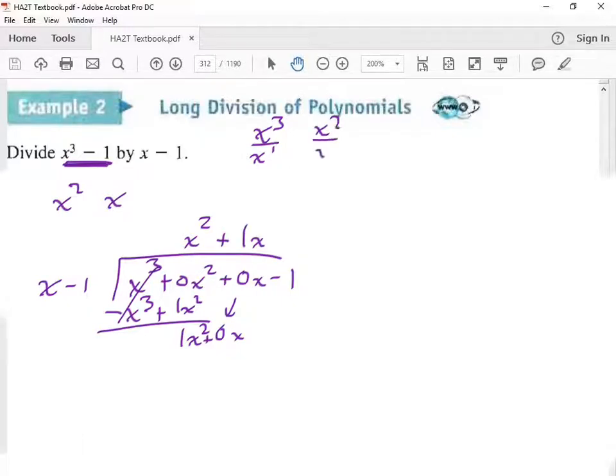x squared divided by x. That's how I got 1x. Notice how I like to put the like terms on top of each other. That's just an organizational thing. You don't have to do that, but I like to do it because it helps out in some parts. So we got 1x times x minus 1.